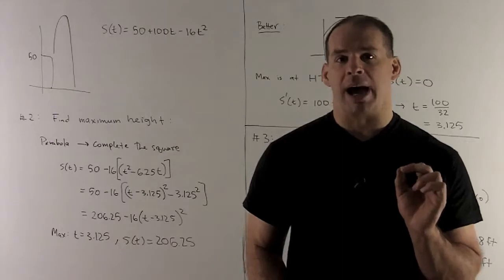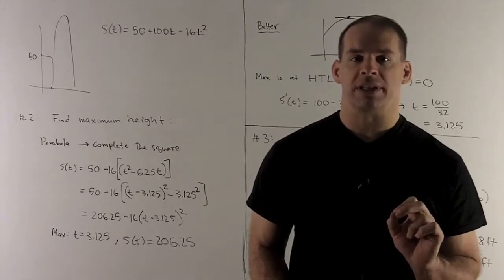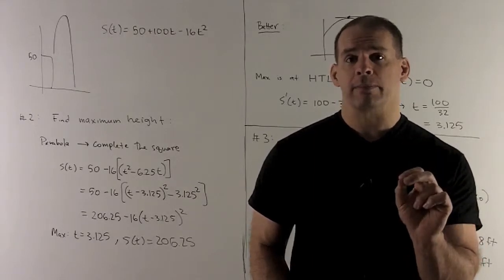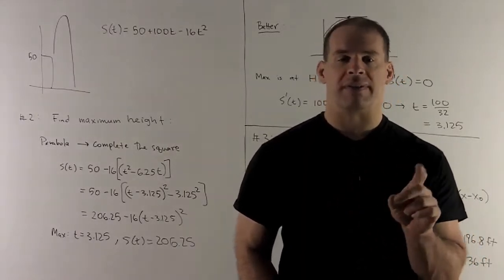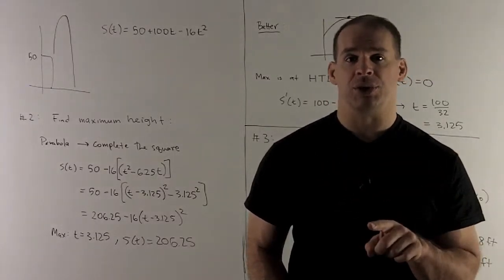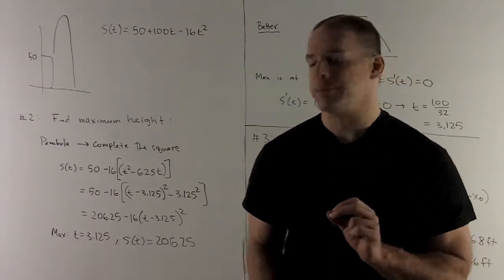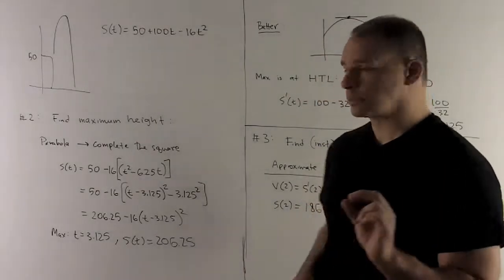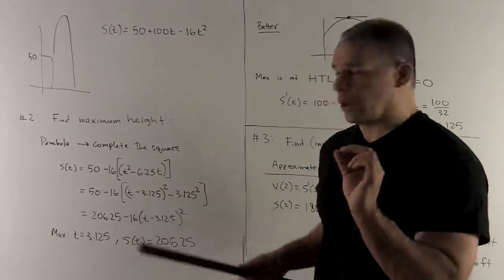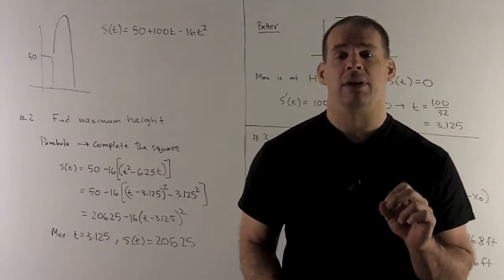Once I have that t squared minus 6.25t, what's the rule for completing the square? You take one half what's in front of the t, you're going to have t minus that in parentheses squared. Then I'm going to square that thing, and we're going to subtract that off. So the rule is, if I have x plus 2ax, completing the square turns that into x minus a, quantity squared, minus a squared. So we do that. So we're going to get this here. I push everything through. That's going to simplify to 206.25 minus 16 times quantity t minus 3.125 squared.